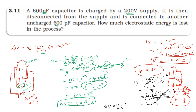The final energy minus initial energy: substituting values gives minus 6 into 10 power minus 12, confirming the energy loss is 6 into 10 power minus 6 Joules.